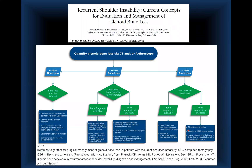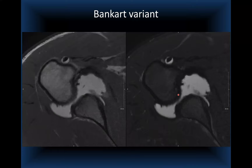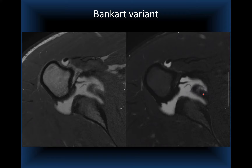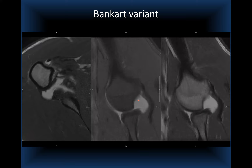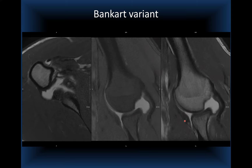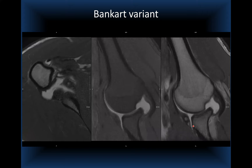Another Bankart variant shows a large mass of displaced tissue with bone fragments entering anteromedially. On ABER with and without fat-sat on the MR arthrogram, the complete detached anteroinferior capsulolabral ligamentous complex with bone pieces from the associated bony Bankart is clearly seen.